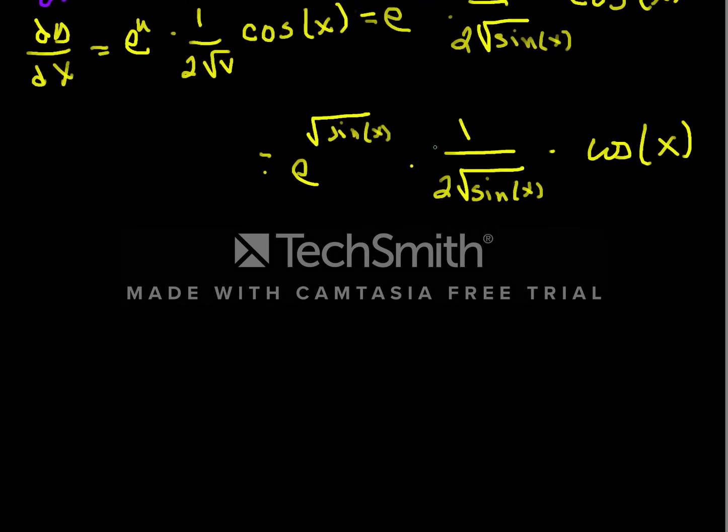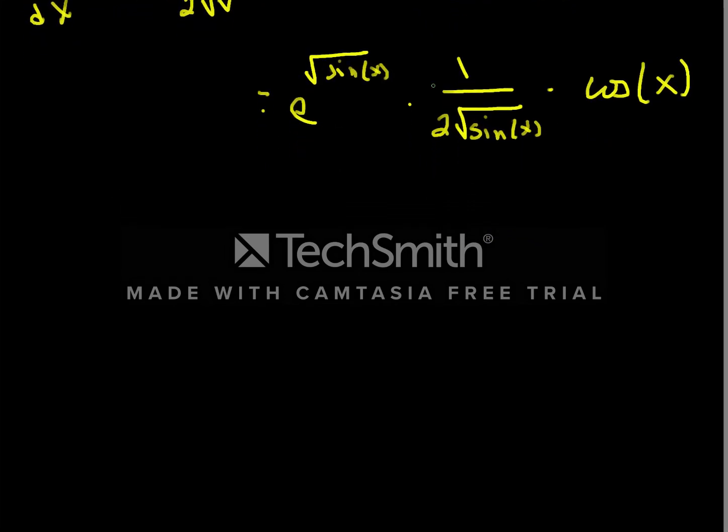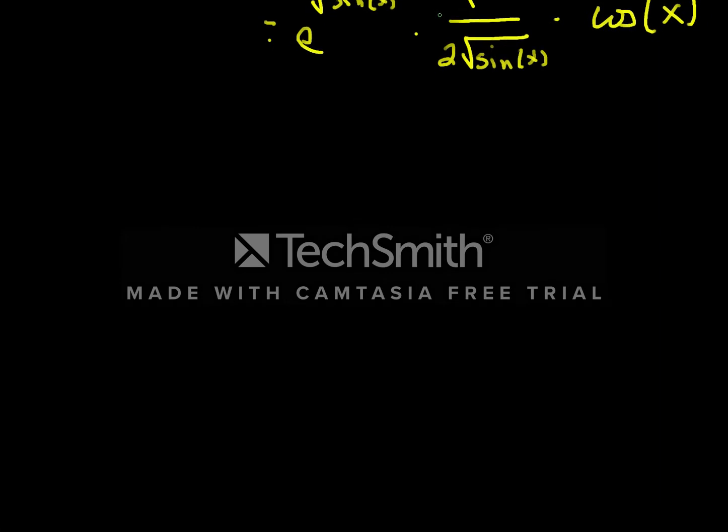So that's one example of using the chain rule, how it's helpful. Another is when you don't know what the functions are, but you know some of their values.